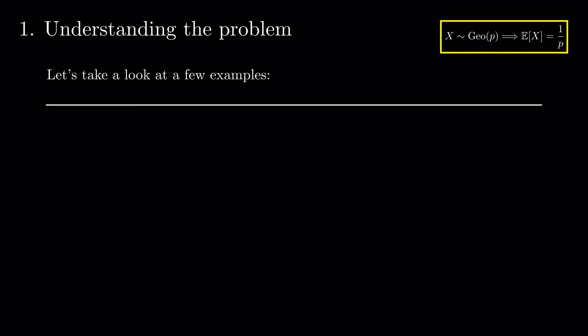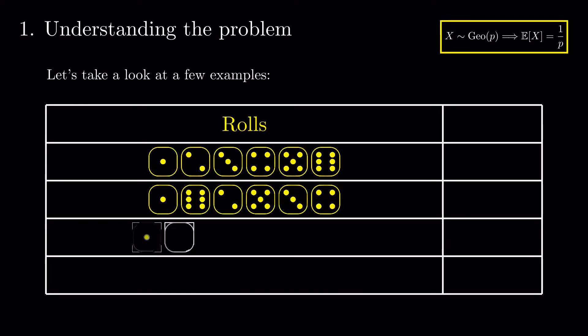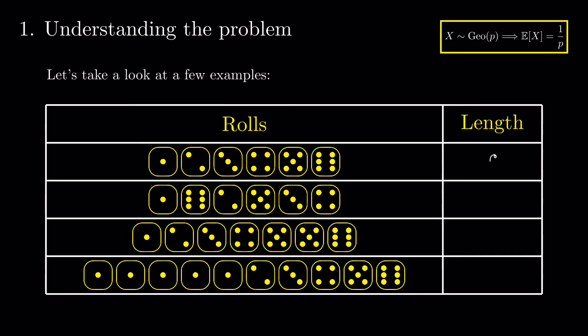Let's take a look at a few examples. Here are some sequences of rolls in which you have stopped after seeing all the values between 1 and 6 and their respective lengths.